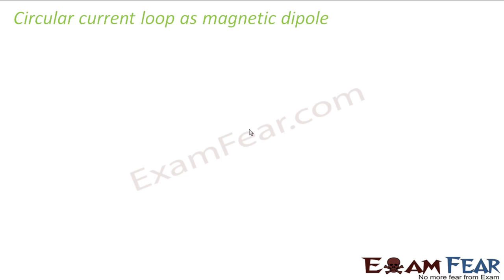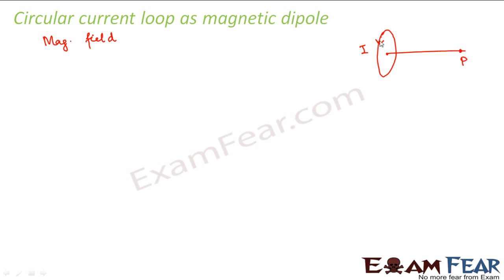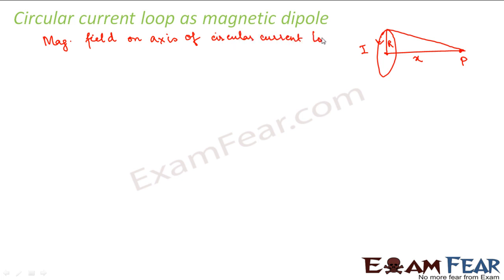I will quickly show you certain evidences which tell that a circular current carrying loop can be considered as a magnetic dipole. We know the magnetic field on the axis of a circular current carrying loop. Suppose this is a loop carrying current I and we want to calculate the magnetic field at some point P, where R is the radius of the coil and x is the distance of point P along the axis.